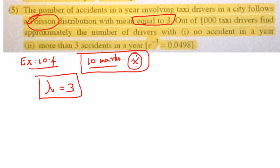So you are asked to find out of 1000 taxi drivers, find approximately the number of drivers with no accidents in a year. Right, that's the first part. The second part is more than 3 accidents in a year. Right. So they have given you n is equal to 1000.